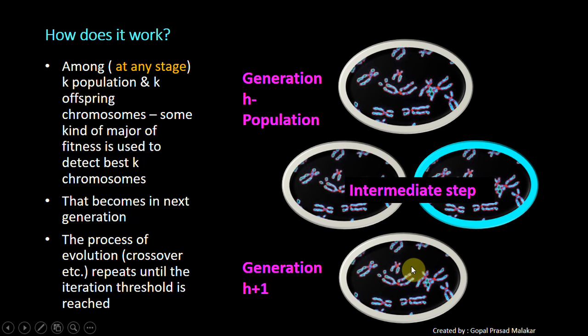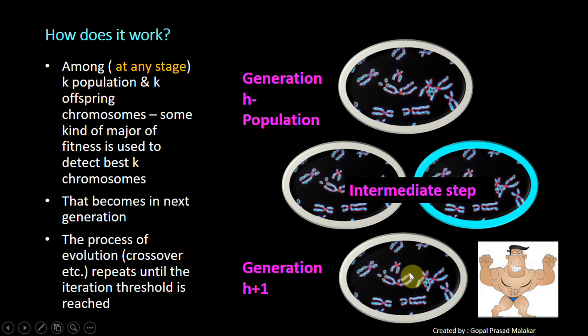Here you selected the best K. This process will repeat until the iteration threshold has reached. And these K that you have obtained at any stage are the most fit for the problem.